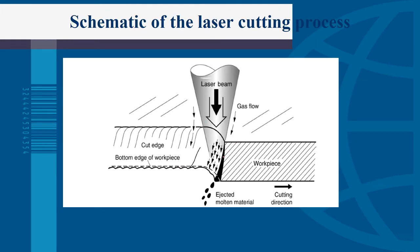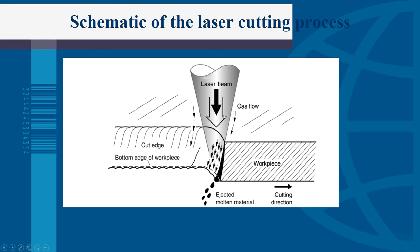This is the schematic of the laser cutting process. You have the laser beam, the remaining work piece, and the direction the laser cutter is moving. This also shows the ejected molten material after being heated by the laser beam.